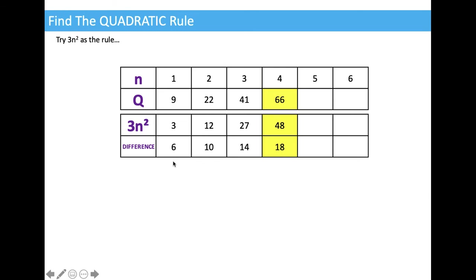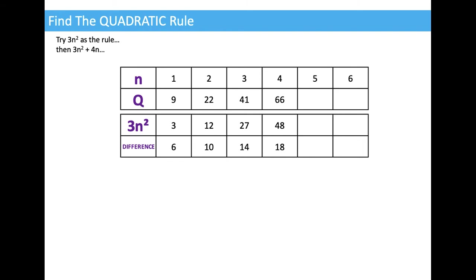The difference between what we got from the rule we tried and what we actually wanted formed a sequence: 6, 10, 14, and 18. Hopefully you can see a pattern to that. The fact that these are going up in 4s every time the n's go up in 1 gives you a big clue that there must be a 4n somewhere in the rule.